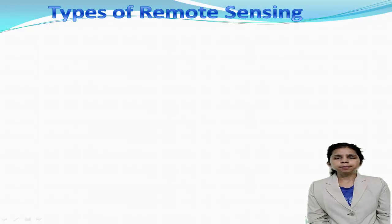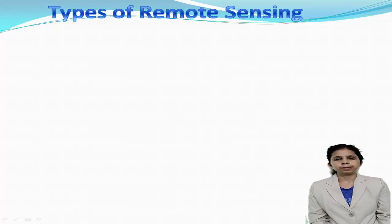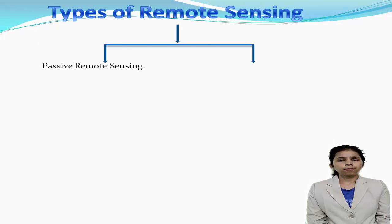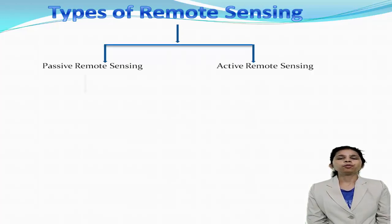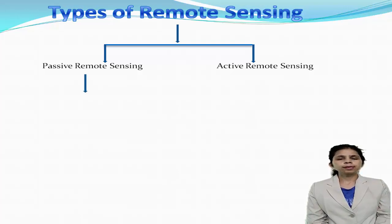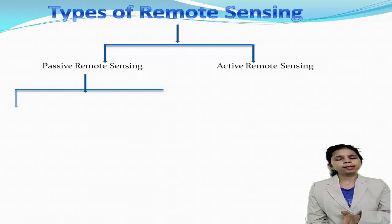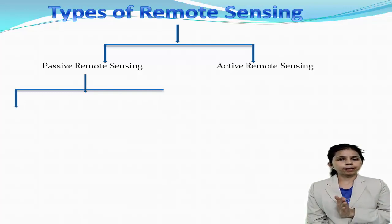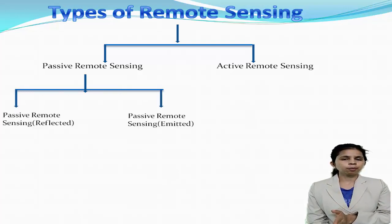Let us study about the types of remote sensing. There are mainly two types of remote sensing: number one, passive remote sensing; number two, active remote sensing. Passive remote sensing can again be divided into two parts: passive remote sensing due to reflected light, and passive remote sensing due to emitted light.